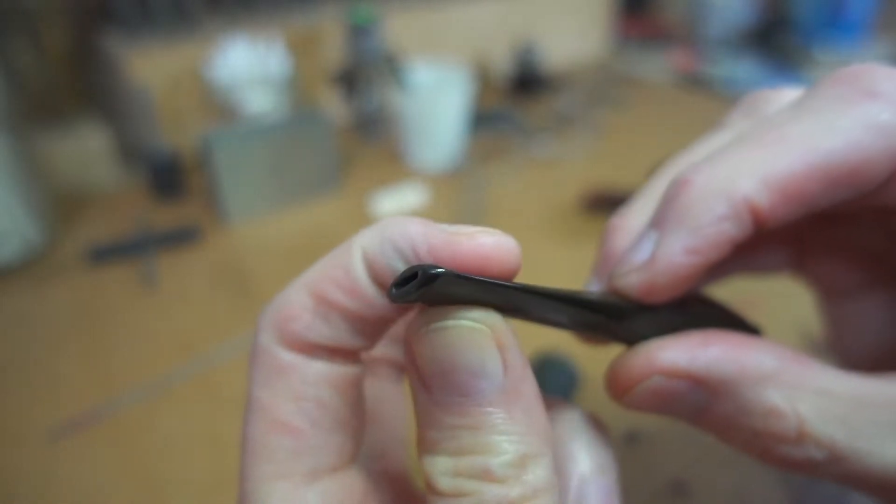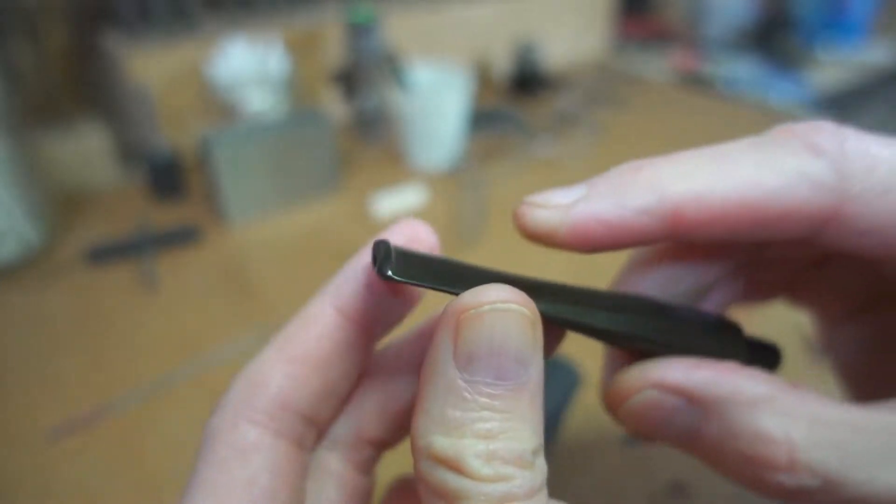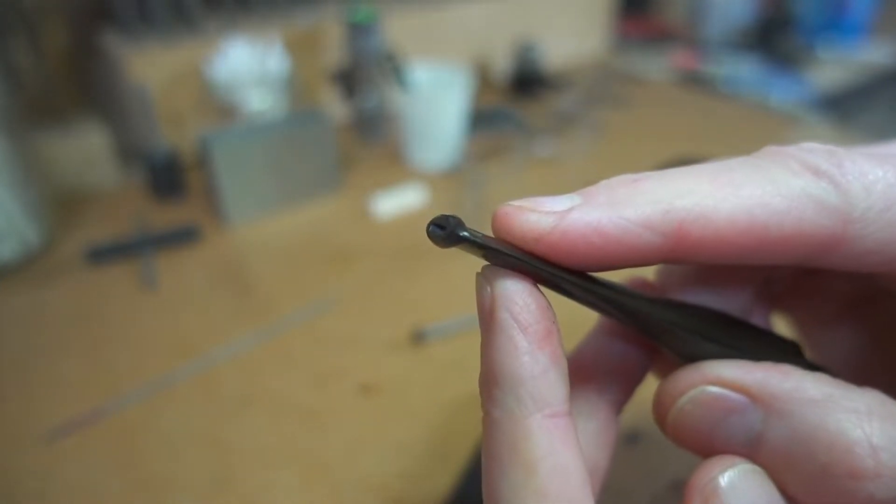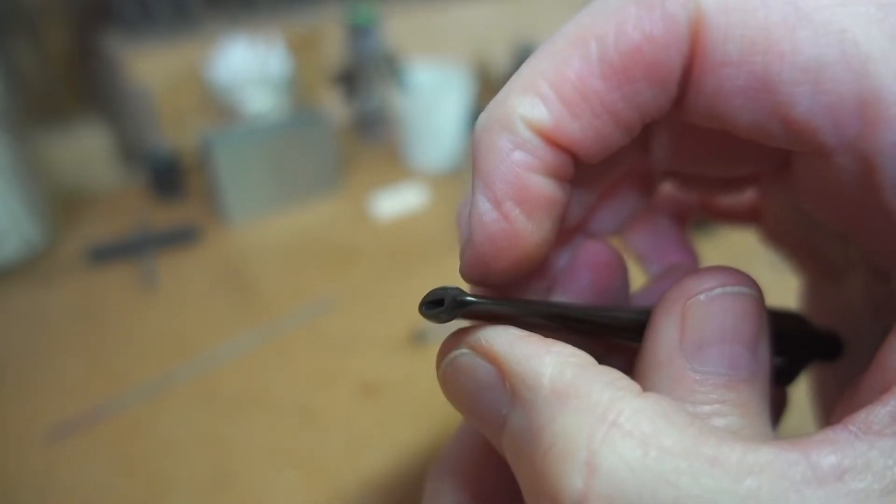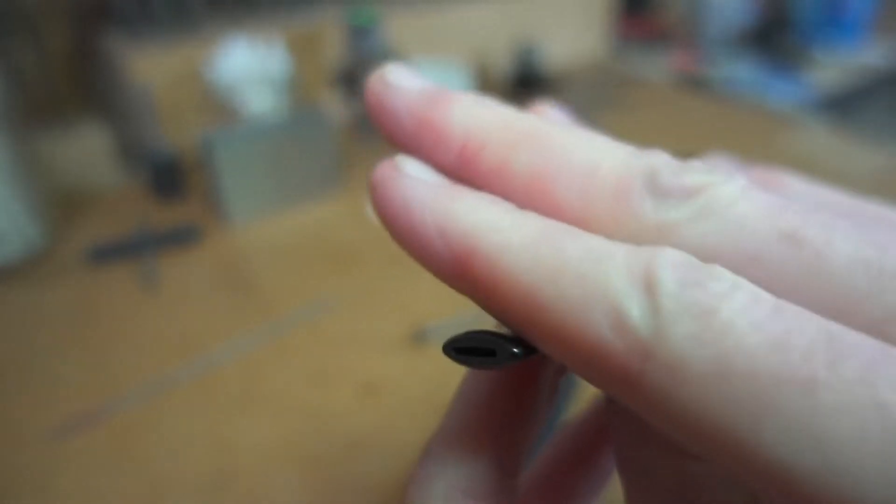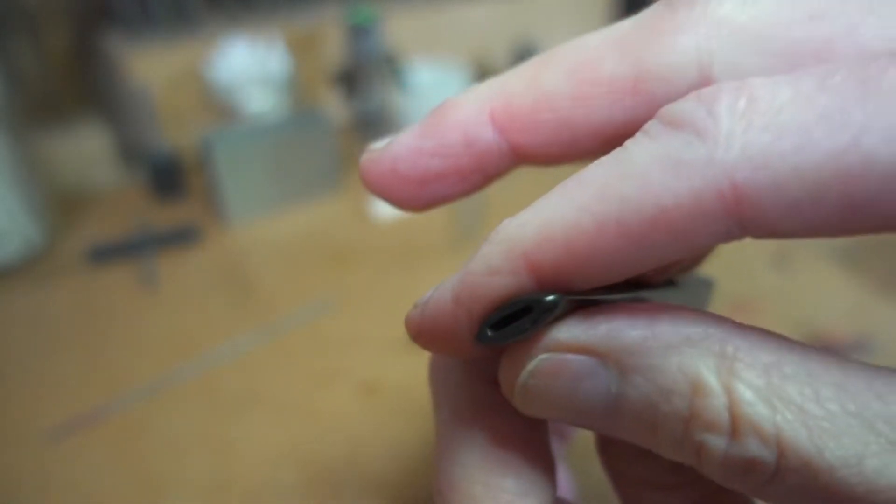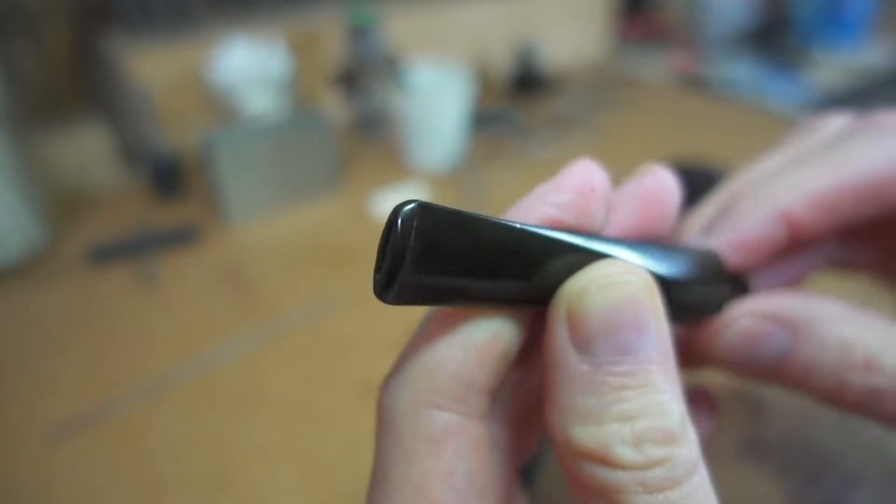And if you do, and the outside of the stem has already been finished, it's complete in terms of material removal, you don't have any space there to accommodate the crooked slot. In other words, you can't continue to shape the outside of the stem in order to bring the slot into alignment. You're SOL.